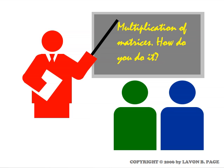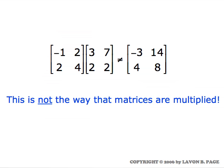This movie is about multiplication of matrices. How do you do it? The first thing to recognize is that it's not the way you might think. You don't multiply just term by term — for example, minus one times three giving minus three. This is not the way matrix multiplication is done. The reason it's not done this way is because this kind of multiplication doesn't prove to be very useful.